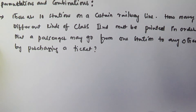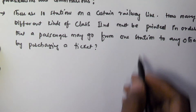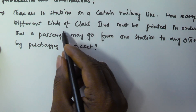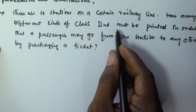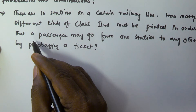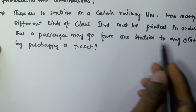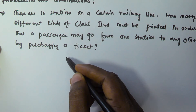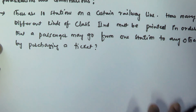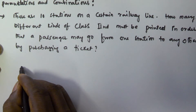So there are 10 stations on a certain railway line. How many different kinds of second class tickets must be printed in order that a passenger may go from one station to any other by purchasing a ticket?